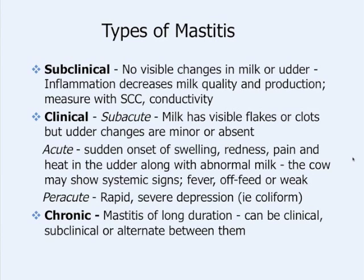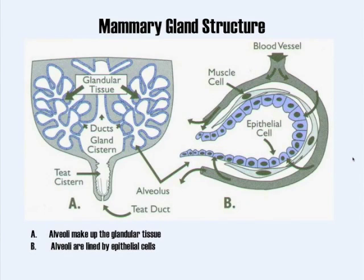Acute means it comes on suddenly. Per-acute is the really severe type — E. coli, toxic mastitis, gangrenous mastitis — where a cow could actually be down or even die from mastitis. It's quite unusual in organic dairies, but it could happen. Chronic mastitis cases are around for a long period of time; they can go away and come back.